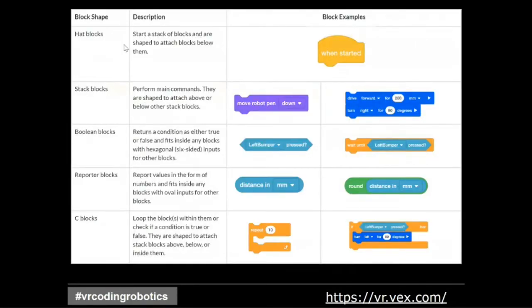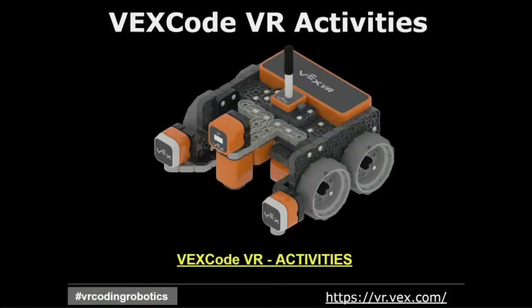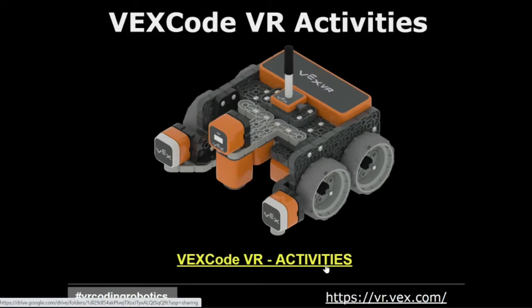There are basic blocks and a bunch of different command examples that go along with them. You have your hat blocks, stack blocks, boolean blocks, reporter blocks, and C blocks. If you were to look at the physical form, the VEX robot looks like this. When we start doing the activities, you'll see that the virtual simulator version looks very similar to this physical robot, and it is possible that some schools will have access to this robot. For a lot more activities that have been collected, you can click on the link at the bottom.